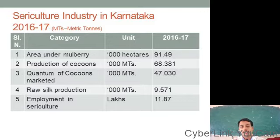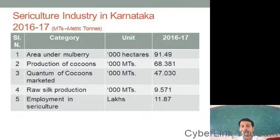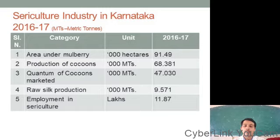The area under mulberry cultivation is 91,499 hectares, and the production of cocoons is 68,381 thousand metric tons. The quantity of cocoons marketed is 47,030 thousand metric tons, and raw silk production was 9,571 thousand metric tons. Sericulture activities provide employment to about 11.87 lakh people in Karnataka.